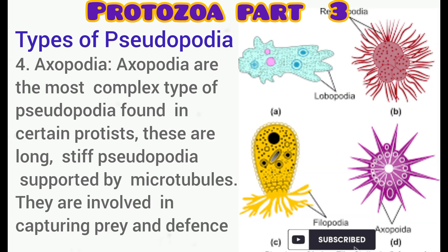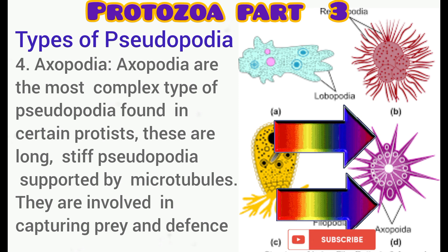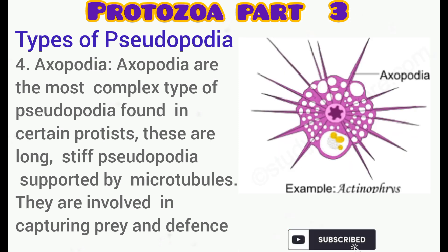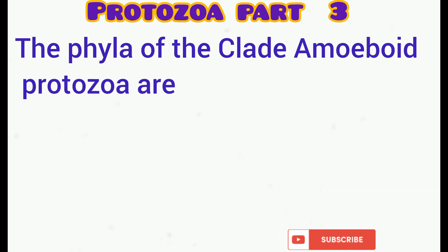The last type is the axopodia, the most complex of all pseudopodia found in protists, and it is found in actinophrys. As you can see from the diagram, axopodia are long, stiff pseudopodia supported by microtubules. They are involved in capturing food and defence.